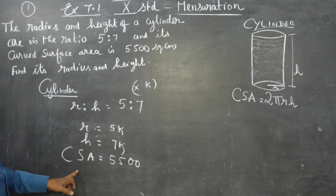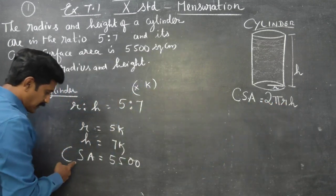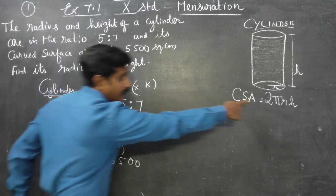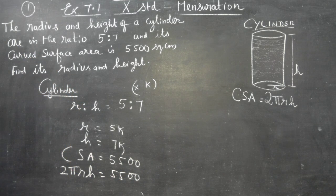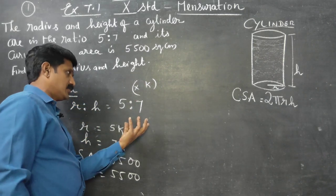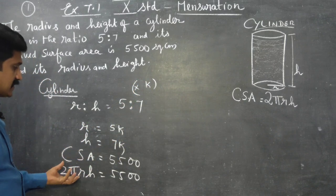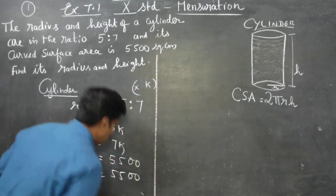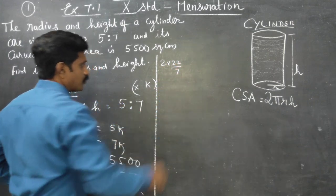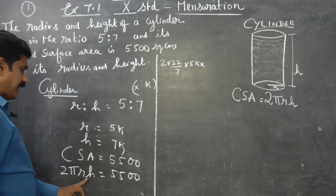Now applying the CSA formula: 2πrh = 5500. So 2 × (22/7) × 5k × 7k = 5500. Substituting r = 5k and h = 7k into the formula.